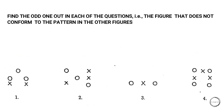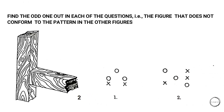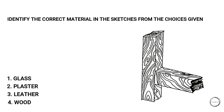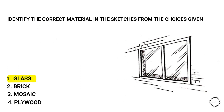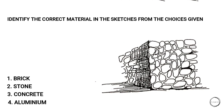Next, same question with different options and the answer is two, because the other options have symmetry if you draw a line in between. Next: identify the correct material in the sketches from the choices given. The answers are: wood, glass, and stone.